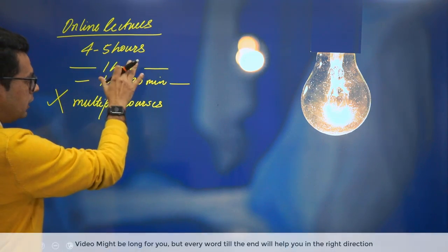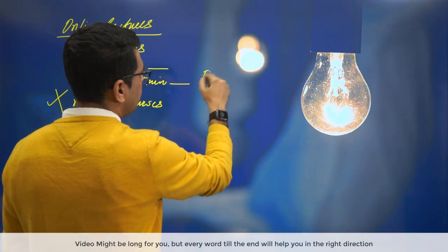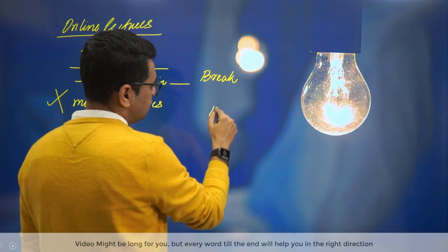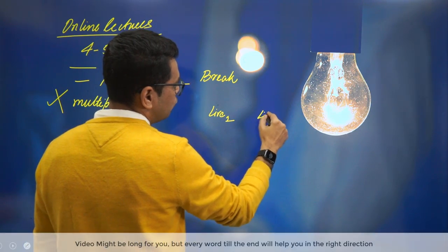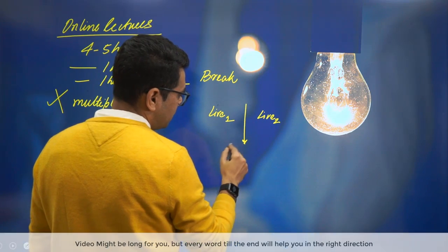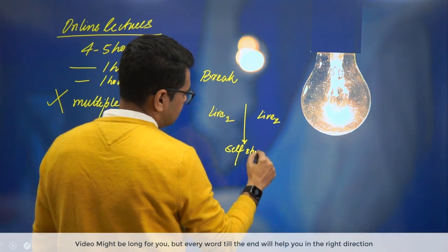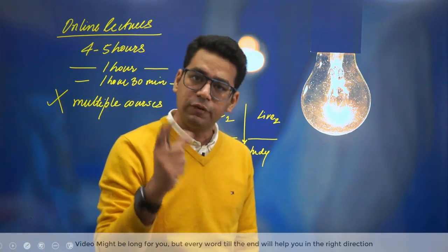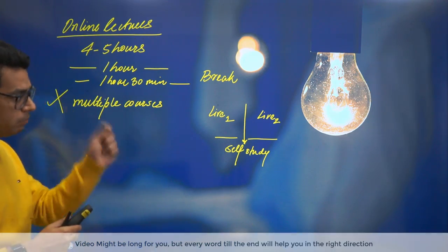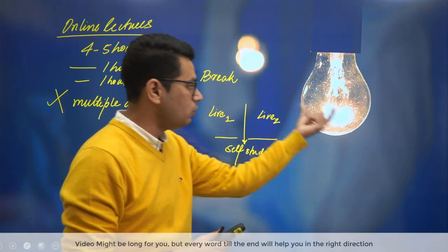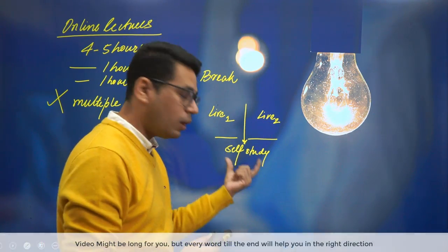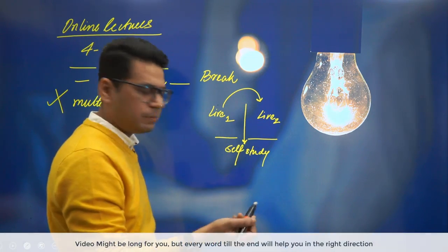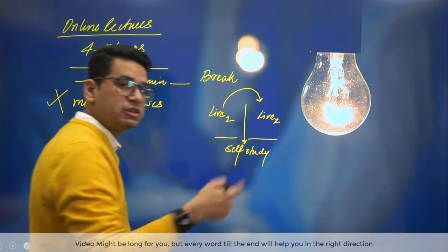Watch lectures in 4 to 5 sessions of 1 hour, or 1 hour 30 minutes maximum, with breaks. Never do two live sessions back-to-back. If you have Live Session 1 and Live Session 2, try to fit a self-study session in between. This gives you the necessary break your eyes need — because many students complain that doing Live Session 1, 2, 3 back-to-back causes eye strain. That eye strain will also go away with this approach.